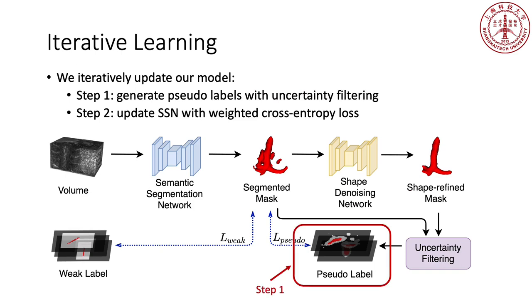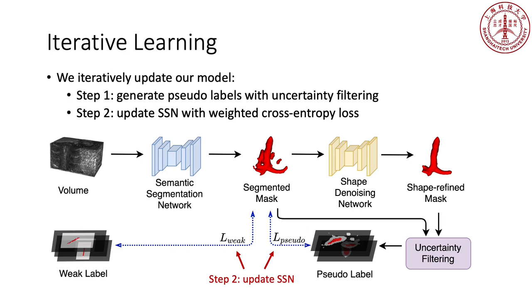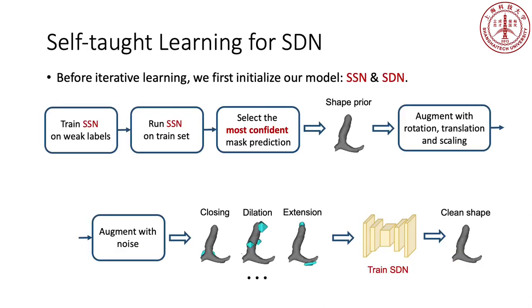We train our model in an iterative learning framework. In step one, we generate pseudo-labels by combining outputs of SSN and SDN with uncertainty filtering. In step two, we update SSN with weighted cross-entropy loss on pseudo-labels and weak labels. Before iterative learning, we need to initialize our SSN and SDN. We first train SSN on weak labels and then run SSN on the trainset. Among all mask predictions on the trainset, we select the most confident one as the shape prior.